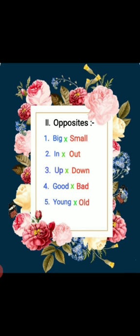Third one: up — down. D-O-W-N. Down. Fourth one: good — bad. B-A-D. Bad. Fifth one: young — old. O-L-D. Old.